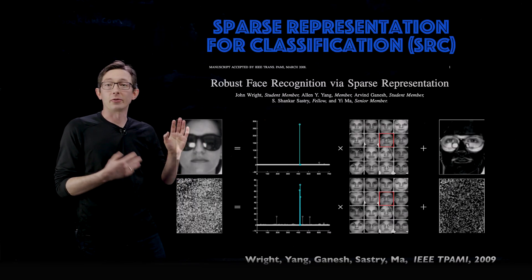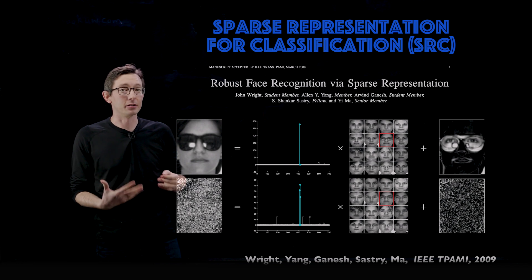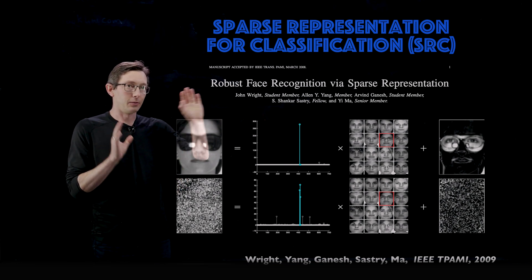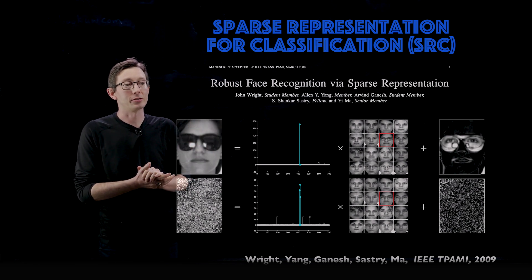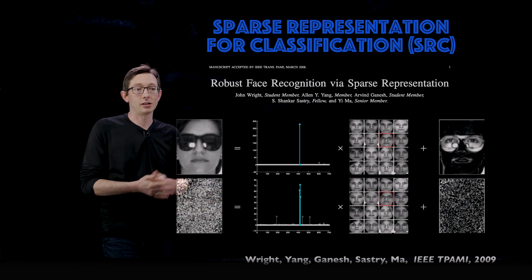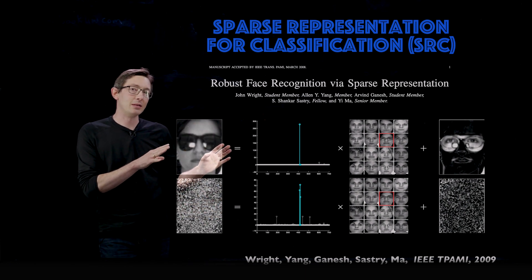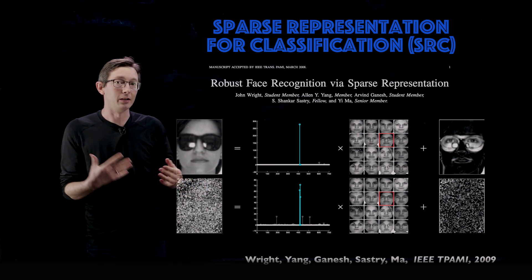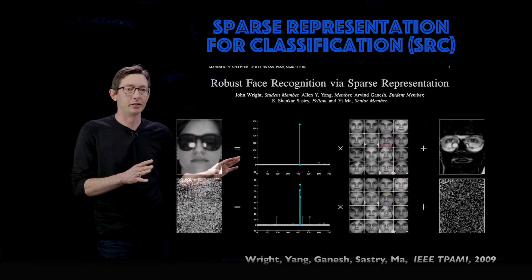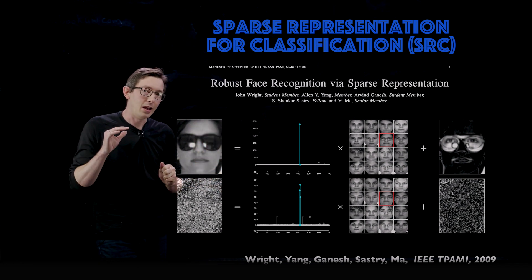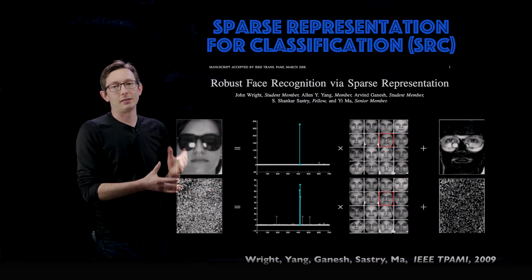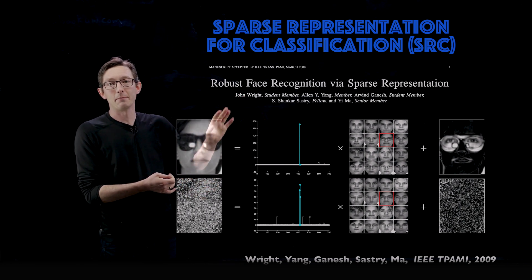Welcome back everyone. Today I'm going to tell you about a really cool algorithm called Sparse Representation for Classification, or SRC. This is work from the seminal 2009 paper 'Robust Face Recognition via Sparse Representation' by Wright, Yang, Ganesh, Sastry, and Ma. In some ways this may be thought of as a predecessor of Robust Principal Components Analysis, which came a little bit later.